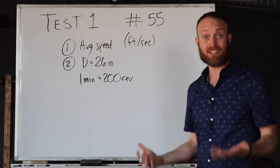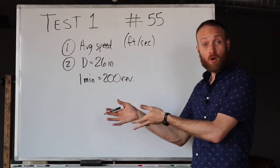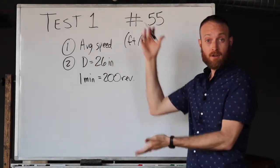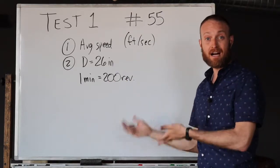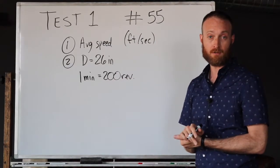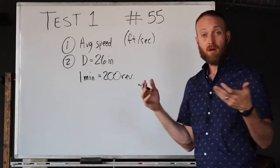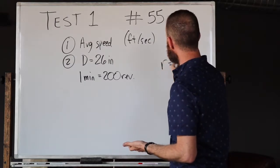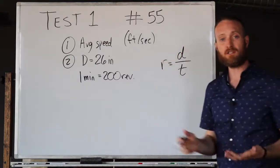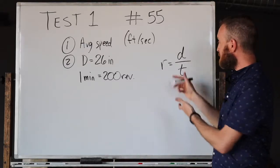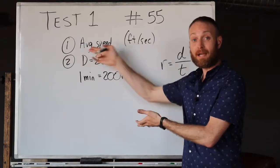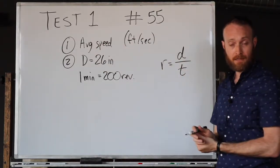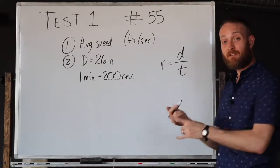We've got step one and step two for our word problem strategy written down, but now comes the part we actually have to start solving this. We know that we have some diameter for the wheel and we have the amount of time it takes to go 200 revolutions. I want to remind you of a nice simple equation: rate equals distance over time. So r = d/t.